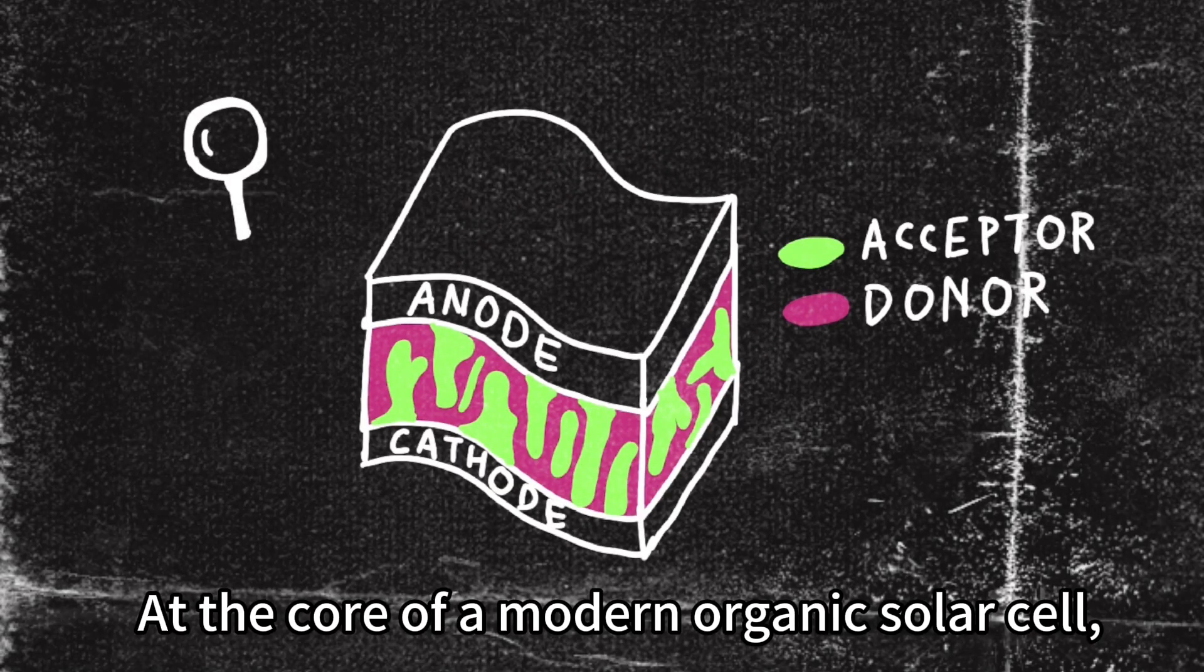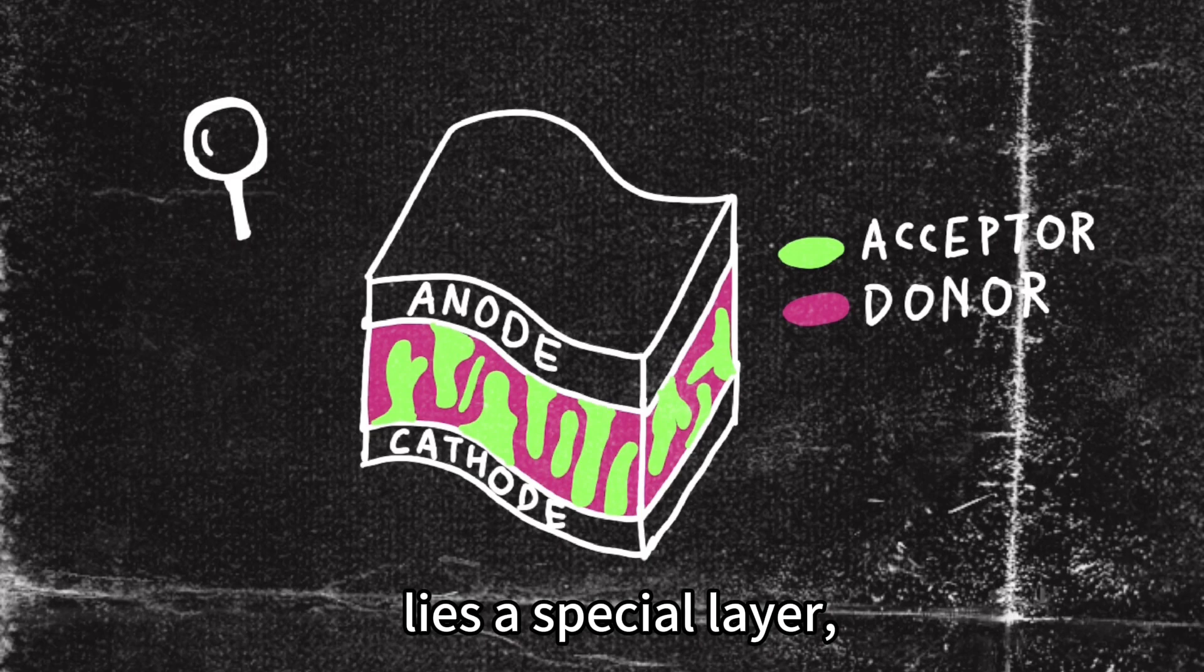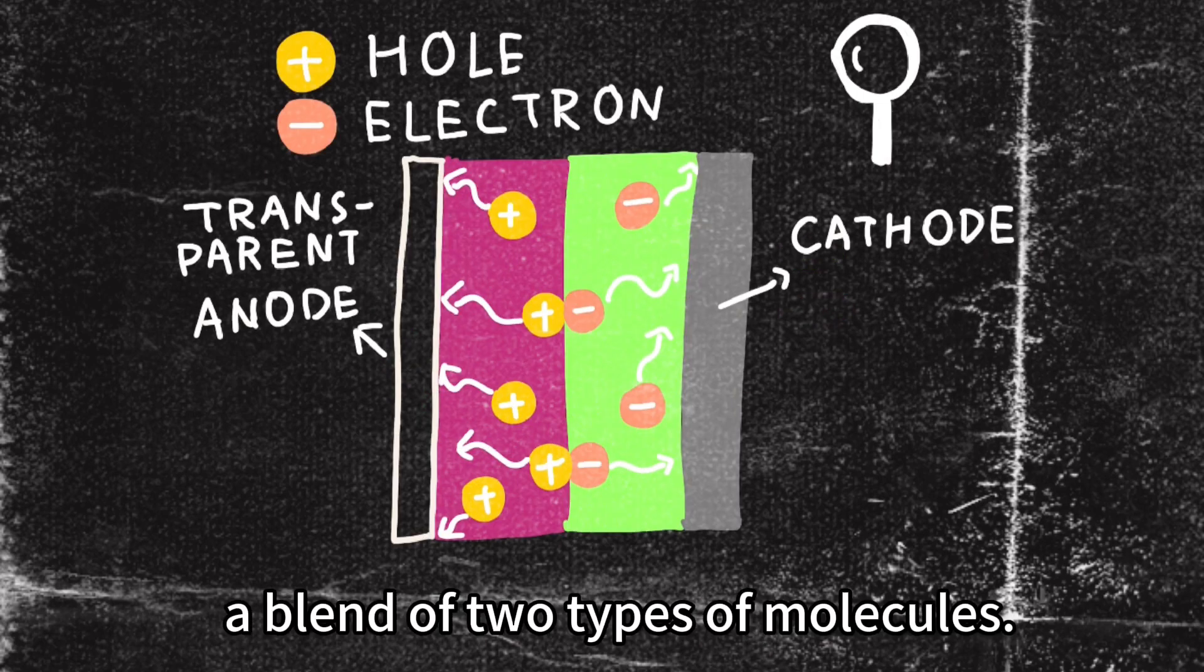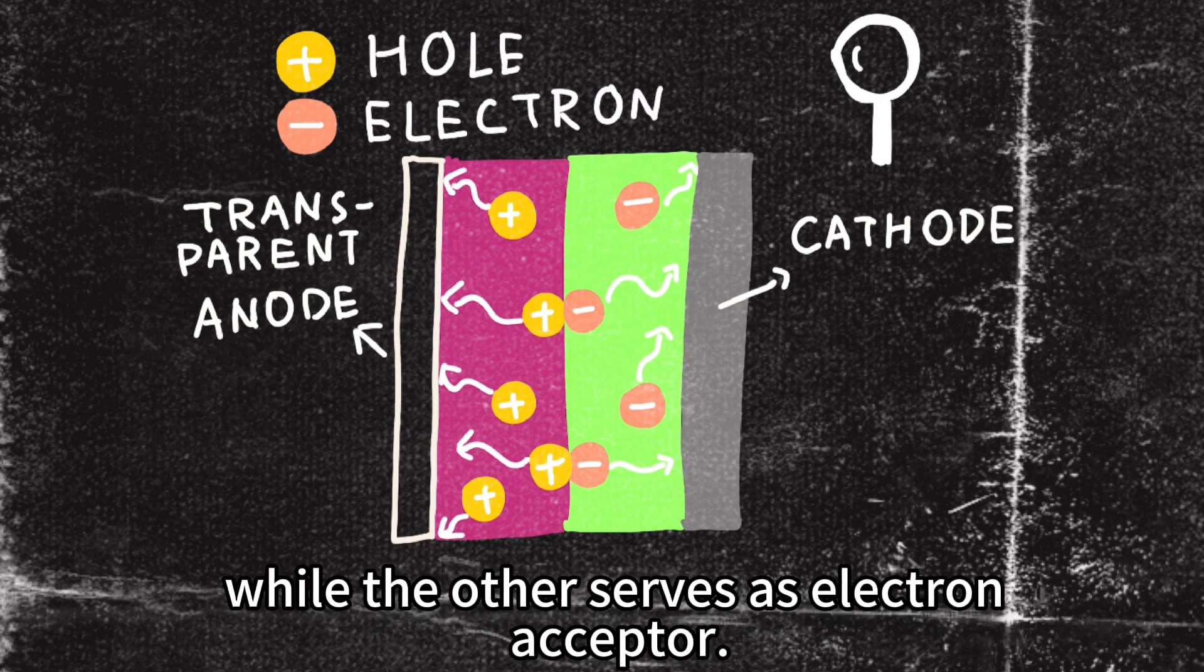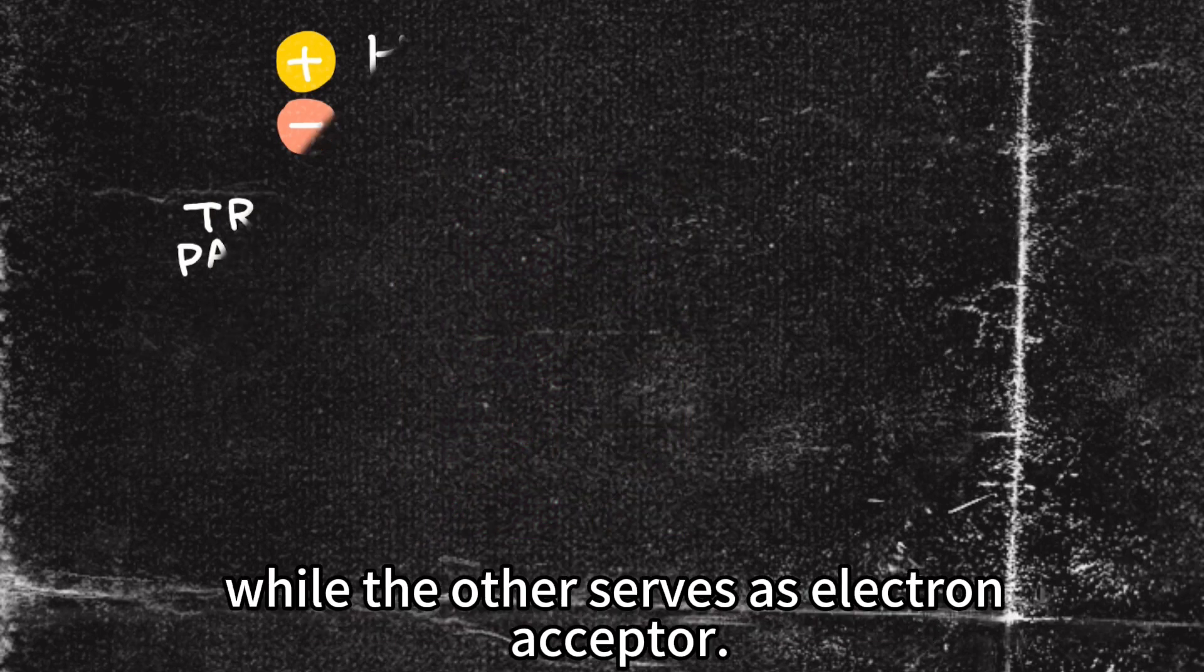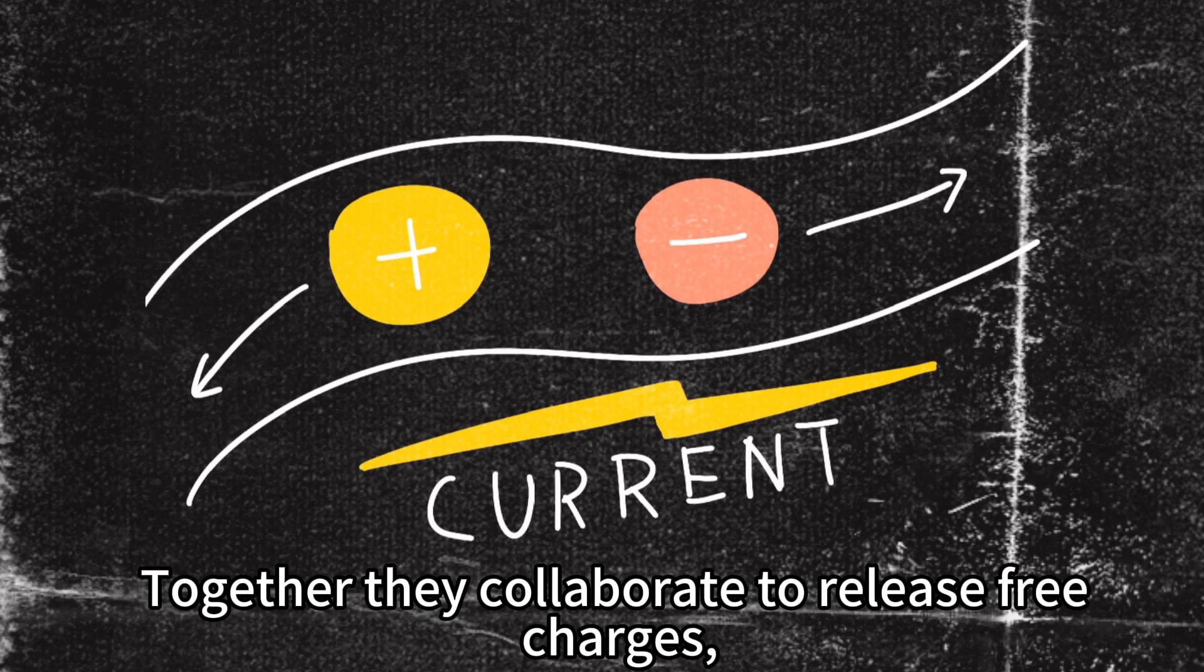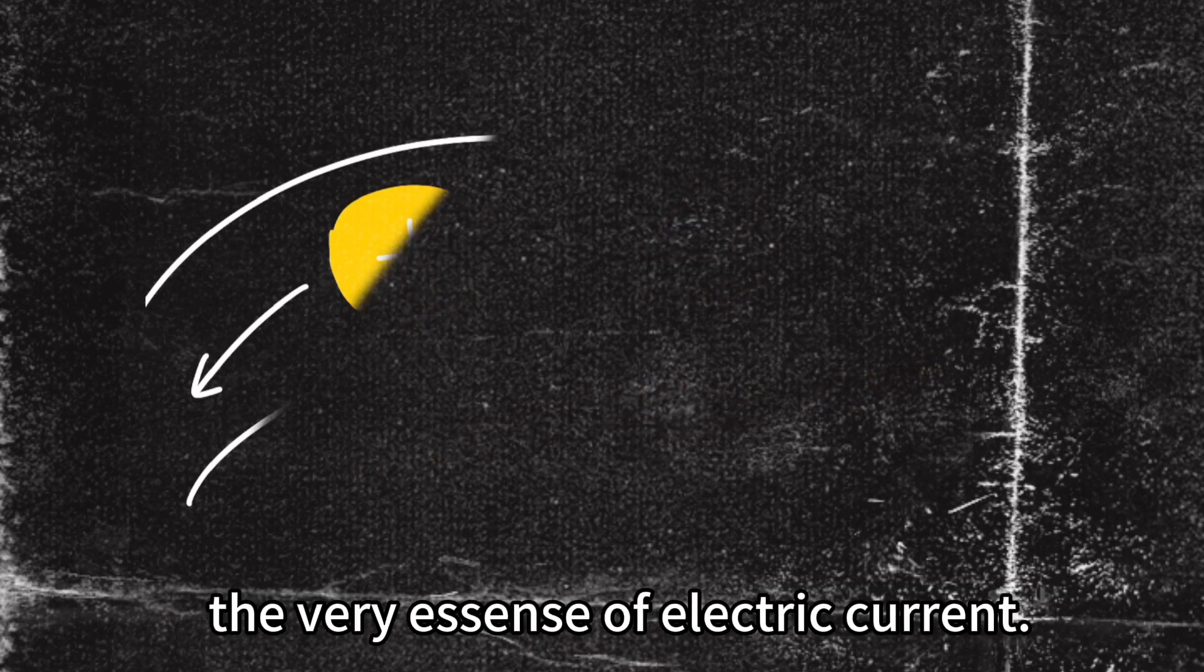At the corner of a modern organic solar cell lies a special layer, a blend of two types of molecules. One acts as electron donor while the other serves as an electron acceptor. Together, they collaborate to release free charges, the very essence of electric current.